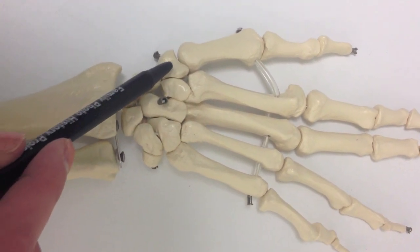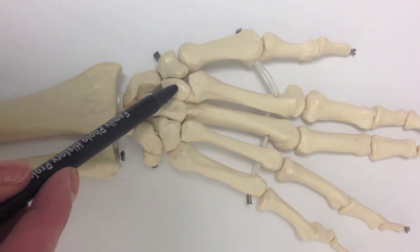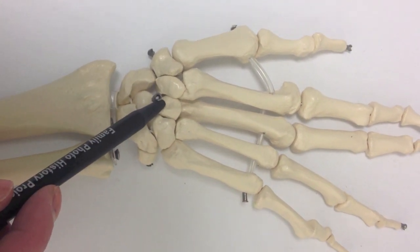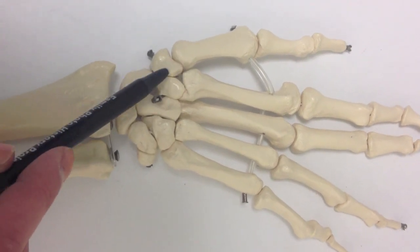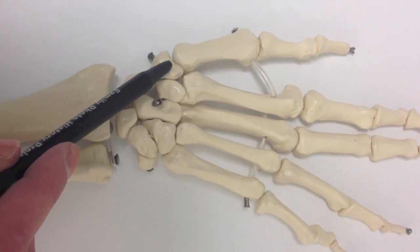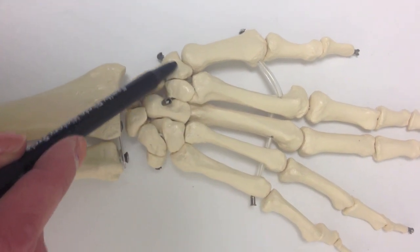And then trapezium, trapezoid, capitate, and hamate. You can remember trapezium under the thumb, it kind of rhymes, to get one of your T's down in the carpal bones.